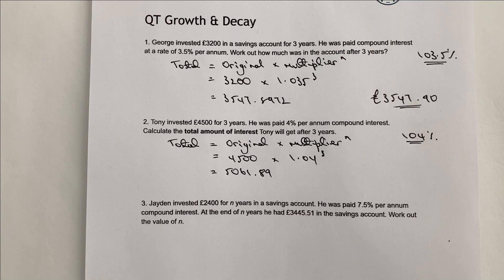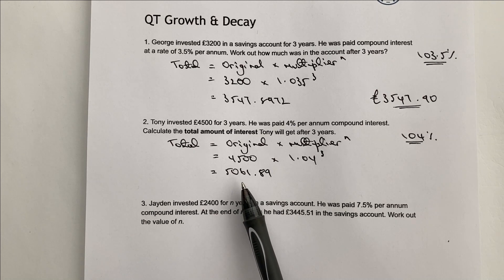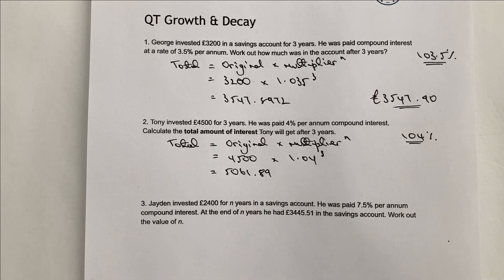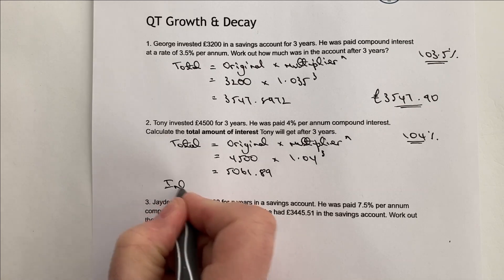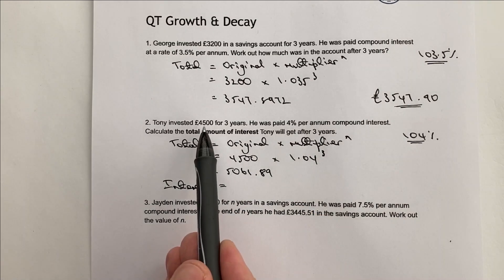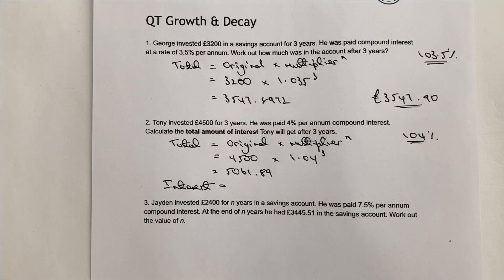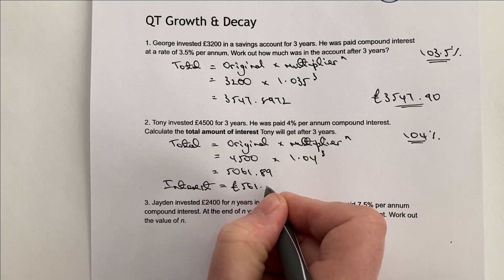We've got to be careful here. That is the amount in Tony's bank account at the end of the three-year period. However, the question does ask for the total amount of interest. These questions will typically be three marks, so you've got to make sure you get that extra mark. All you need to do is say the interest is the difference between what he's got at the end of three years — which is £5,061.89 — take away what he started with, which is £4,500. So the interest is going to be £561.89.